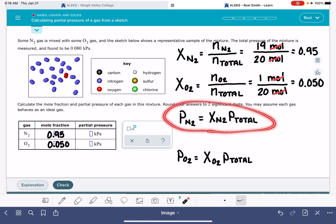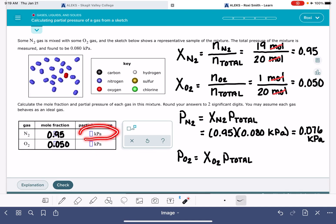Now we're ready to calculate the partial pressures. We're going to take the mole fraction of N2 that we calculated—remember it's unitless—and multiply by the total pressure, which is given in the problem: 0.080 kilopascals. 0.95 times 0.08 kilopascals is 0.076. Checking the units, they want kilopascals, so that works perfect. We don't have to do any conversion.